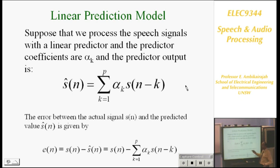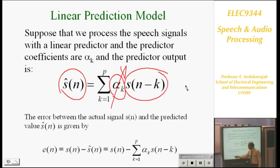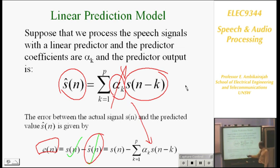How do we set up this model? This is the estimated current speech value. This is your predictor coefficient you are trying to find, and this is your past sample. I can now say the error E(n) is equal to the current sample S(n) minus the estimated S-hat(n). S-hat(n) is: sum of alpha_k · S(n-k). So E(n) = S(n) - sum(alpha_k · S(n-k)). We need E(n) squared.